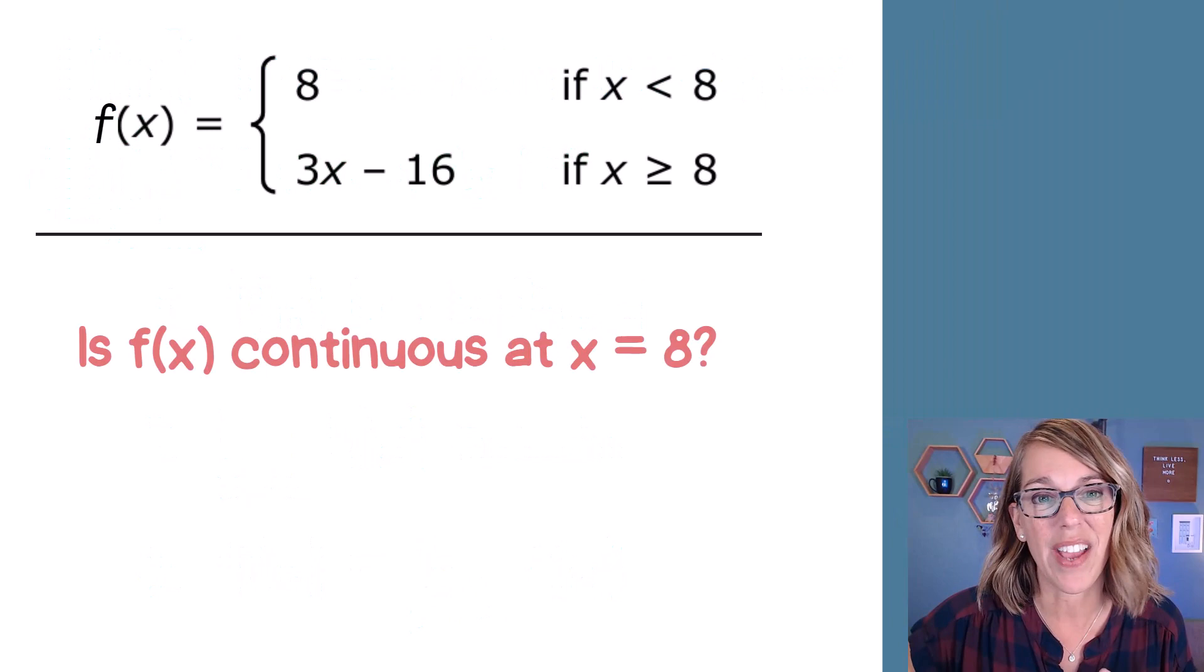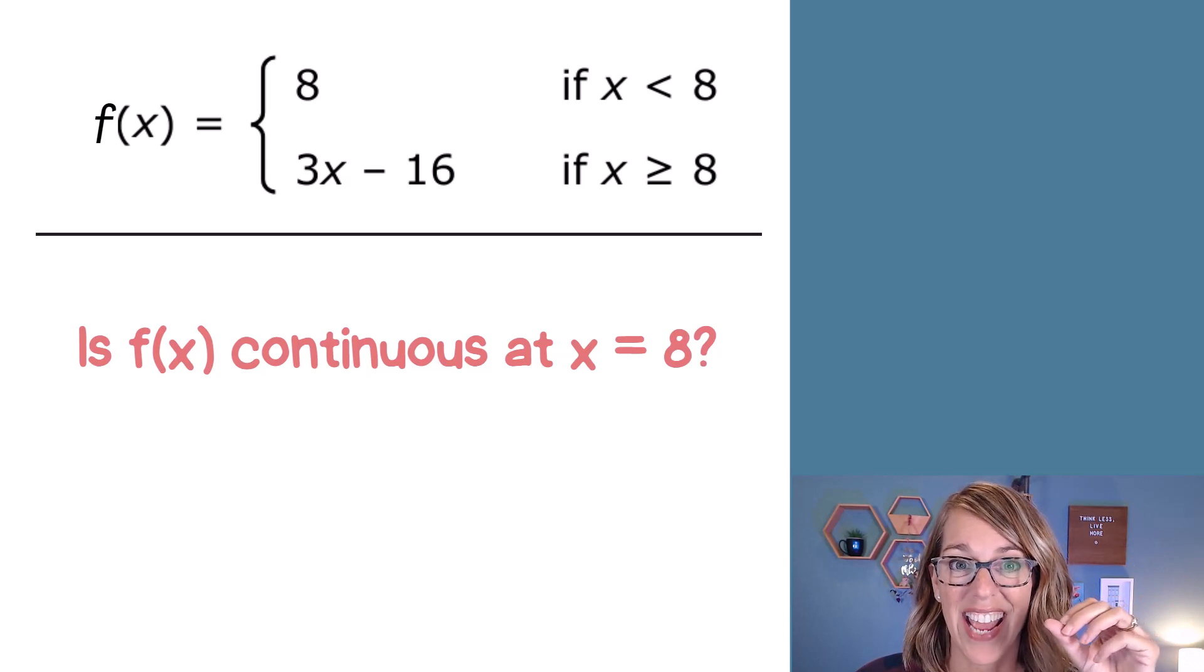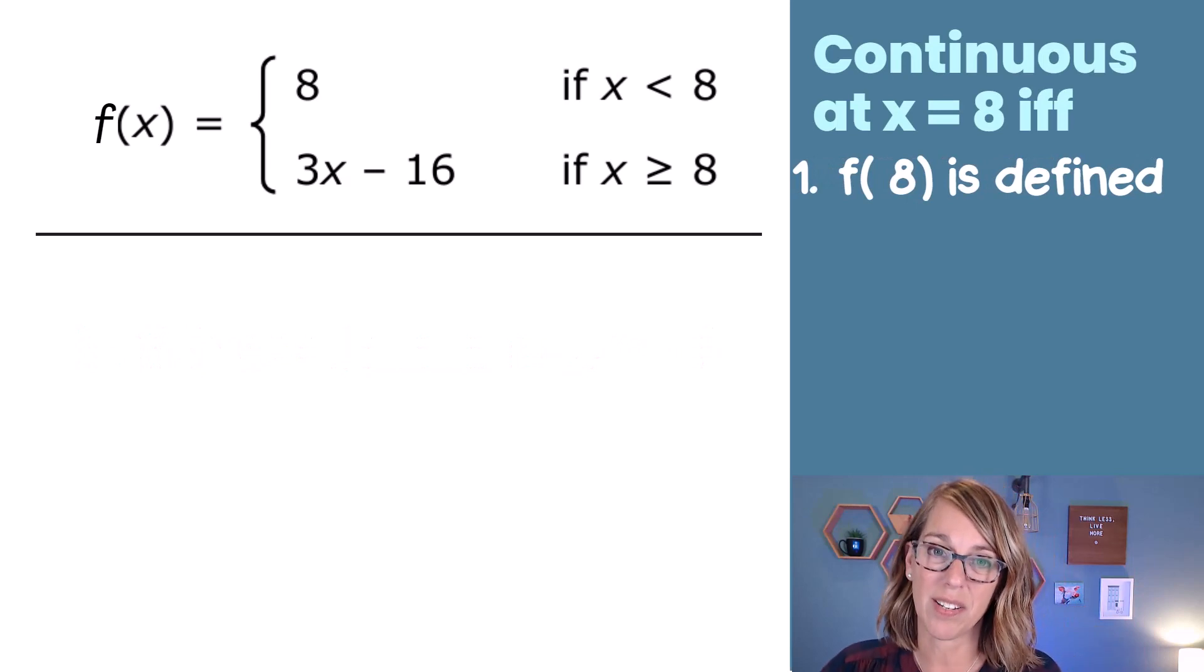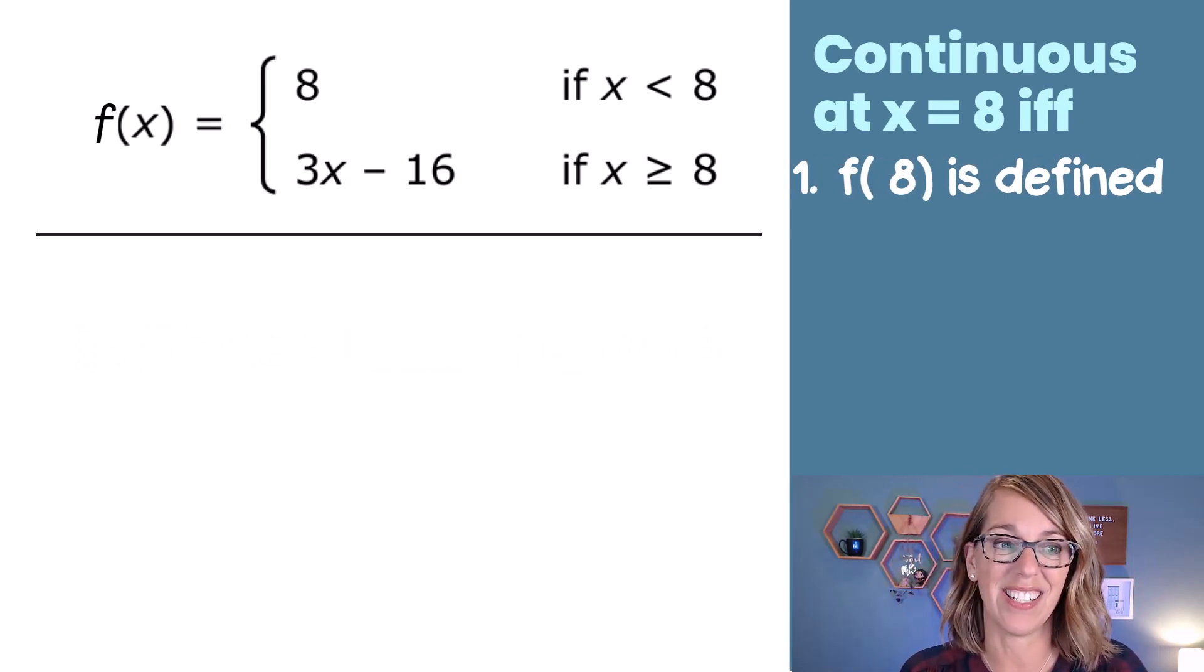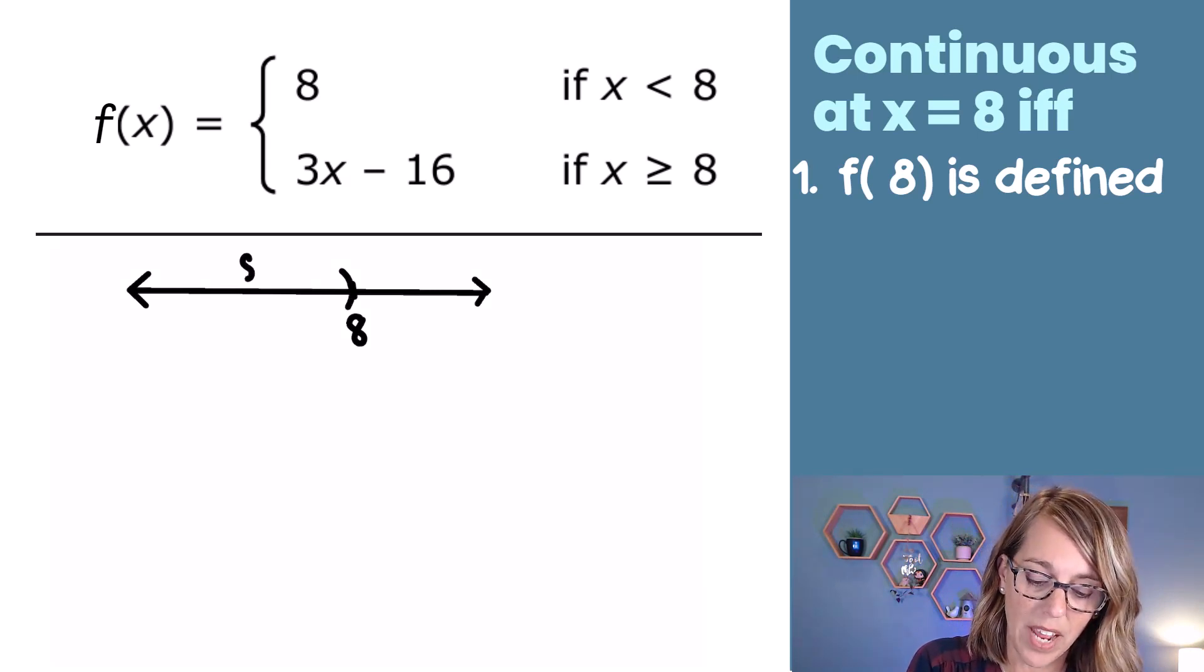Let's dive into an example. For this one, I've got a piecewise defined function, and I want to test for continuity at 8. Well, the very first thing that we've got to do is to check to make sure that f(8) is defined. So my piecewise function says that if I am less than 8, I'll use a parenthesis there, f(x) is equal to 8.